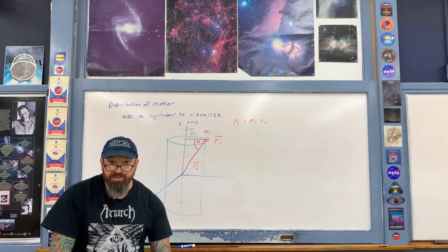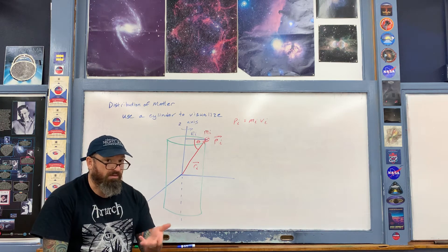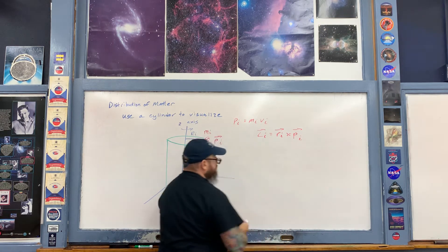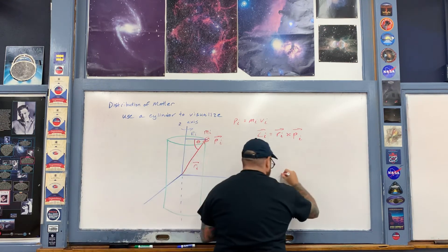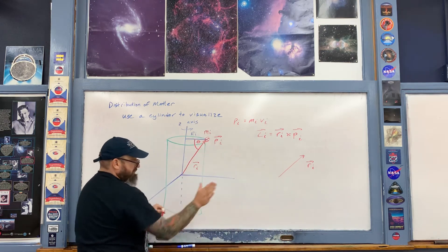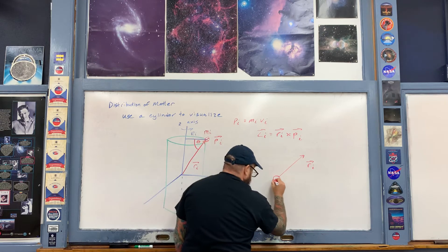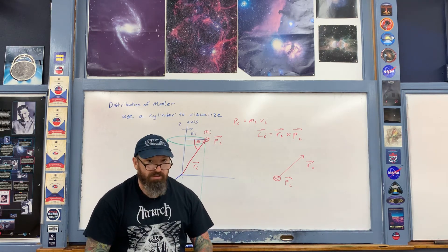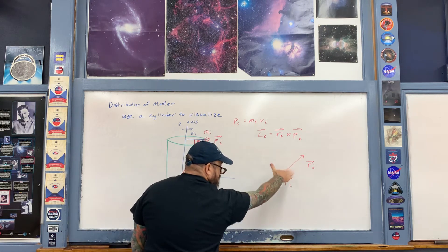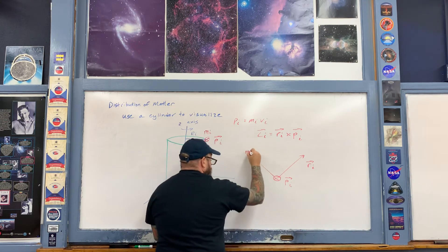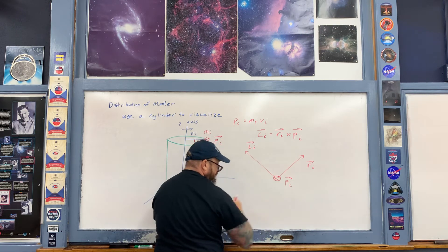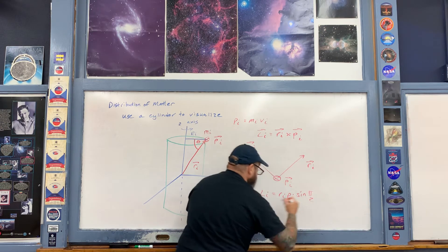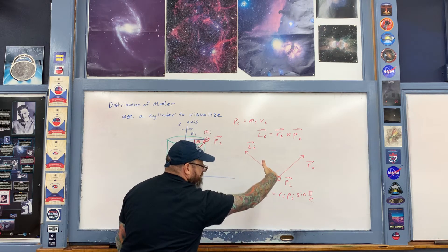Now let's calculate the angular momentum L sub i of this point particle. We have to do r sub i cross p sub i. So L sub i equals r sub i cross p sub i. There is a 90 degree angle between those two vectors. Doing the cross product, r sub i cross p sub i gives us L sub i perpendicular to those two vectors. In magnitude, L sub i equals r sub i times p sub i times the sine of 90 degrees.